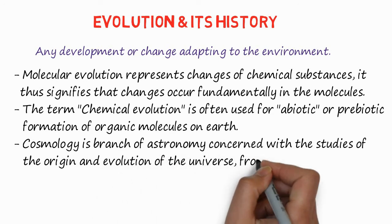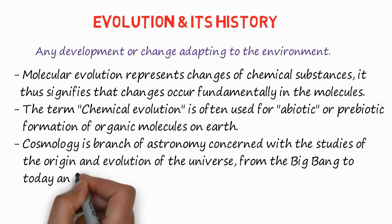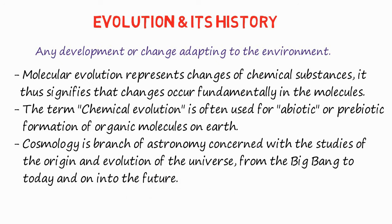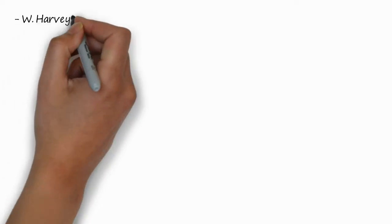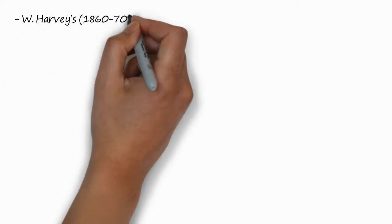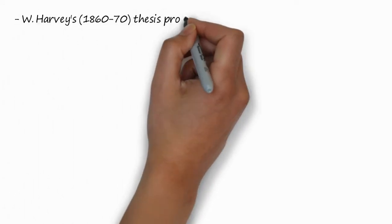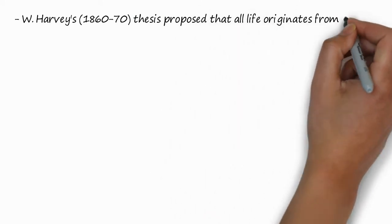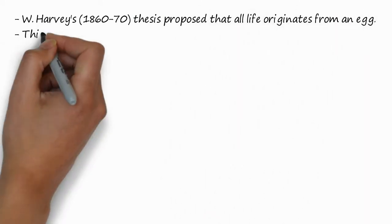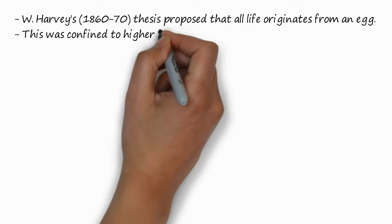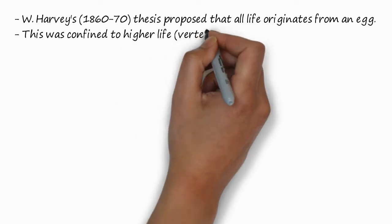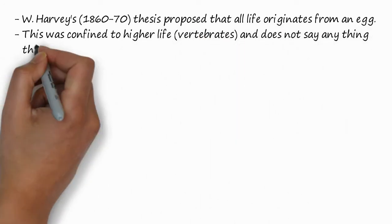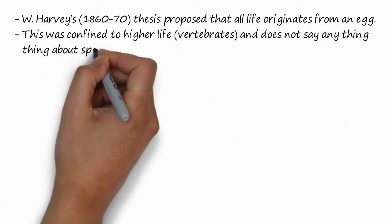Cosmology is the branch of astronomy concerned with the study of the origin and evolution of the universe, from the Big Bang to today and into the future. William Harvey proposed that life originally came from an egg. This was actually confined to higher life forms, that is vertebrates, and does not say anything about the spontaneous generation of life.